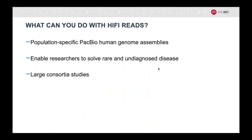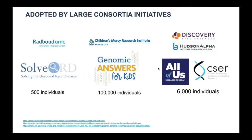Variant detection has also been adopted by large consortia studies across the globe. Several large consortia are implementing HiFi sequencing for variant detection in their studies. In the U.S., Children's Mercy Kansas City is applying HiFi sequencing to the Genomic Answers for Kids project, planning to sequence 100,000 individuals total. Discovery Life Sciences at Hudson Institute for Biotechnology has started to apply long-read sequencing to thousands of human genomes to characterize both common and disease-causing variants.